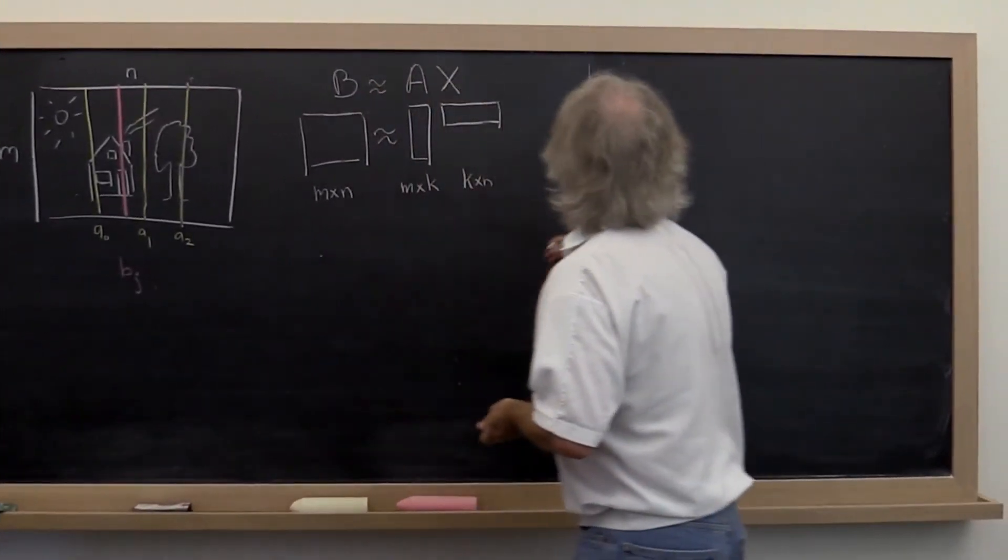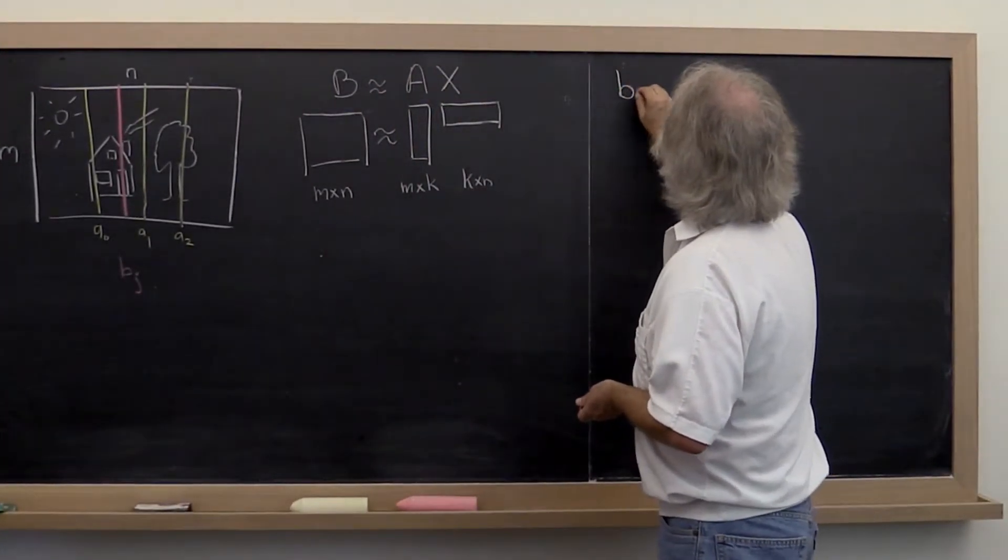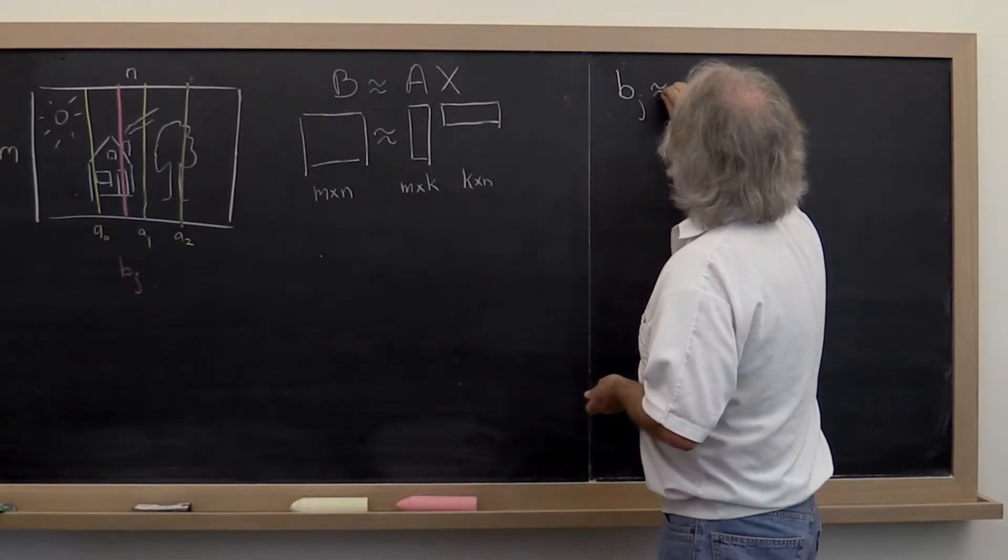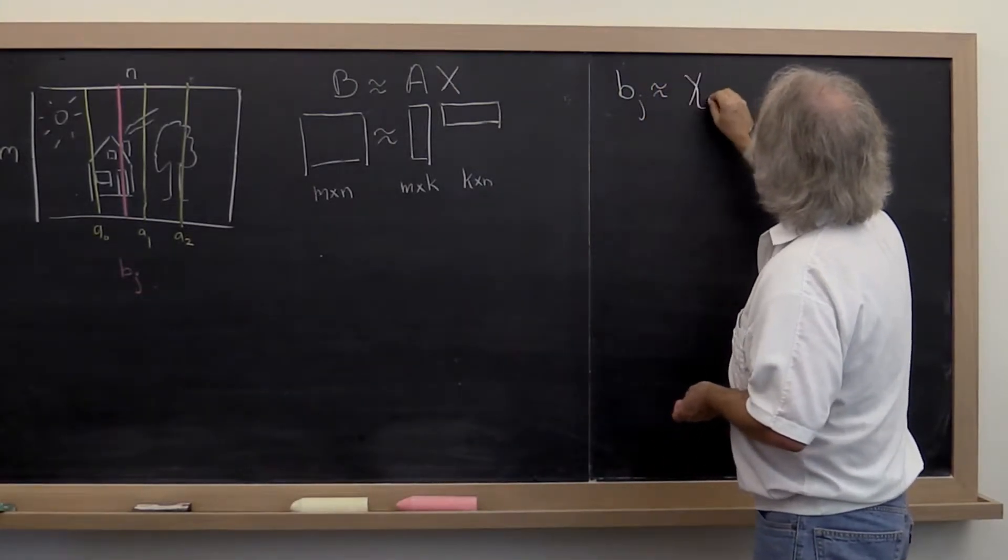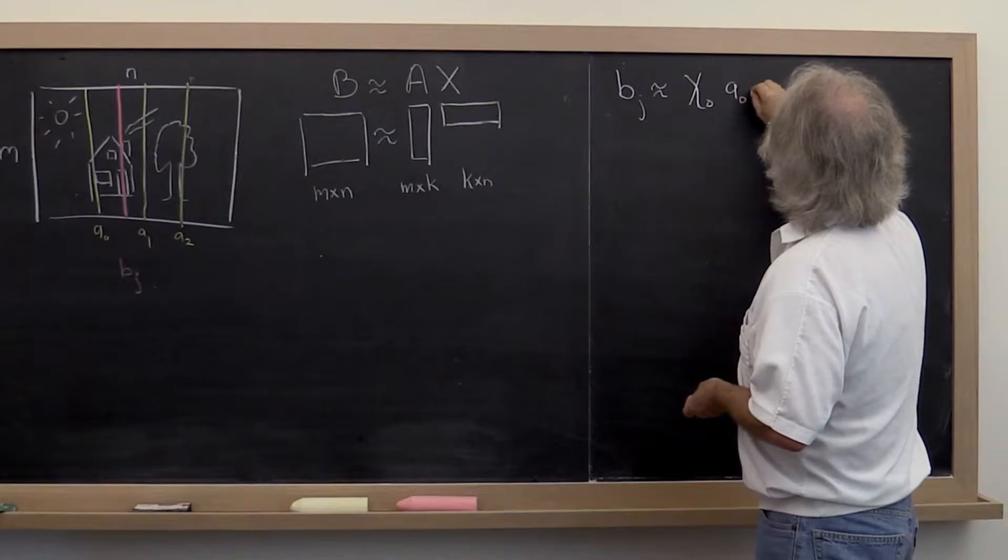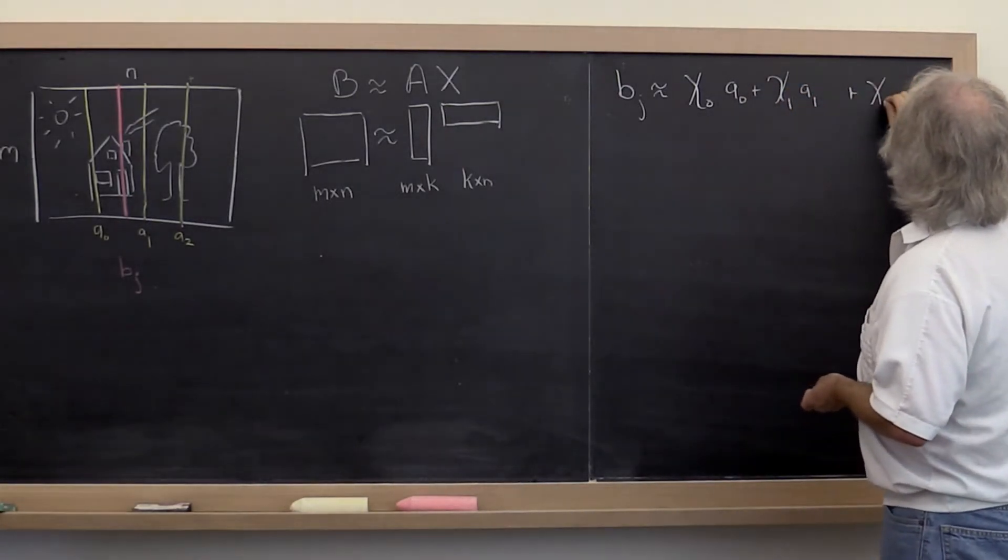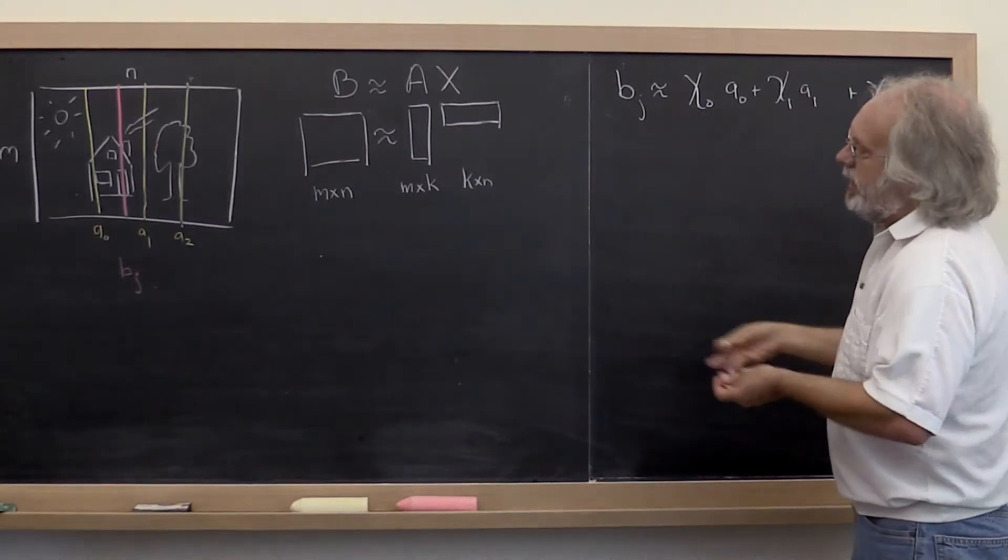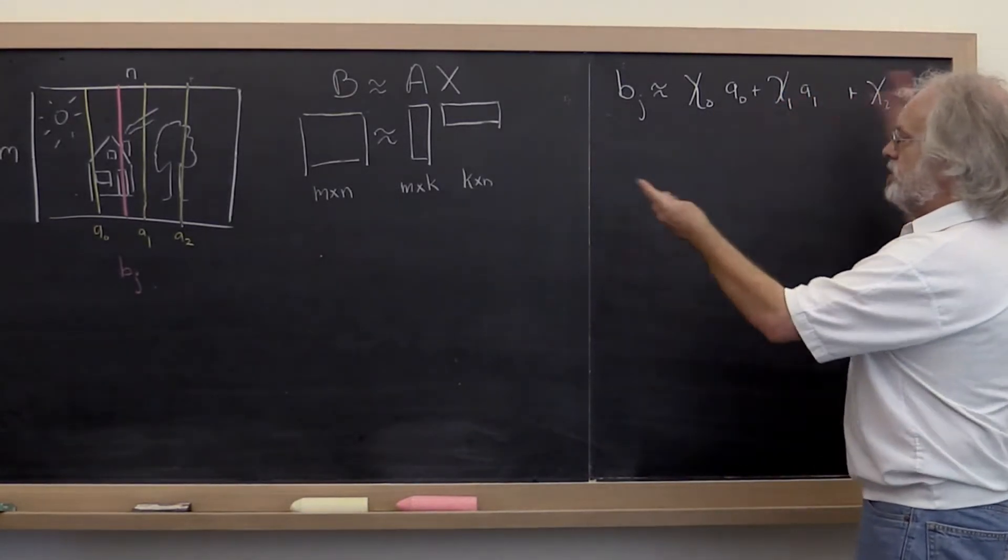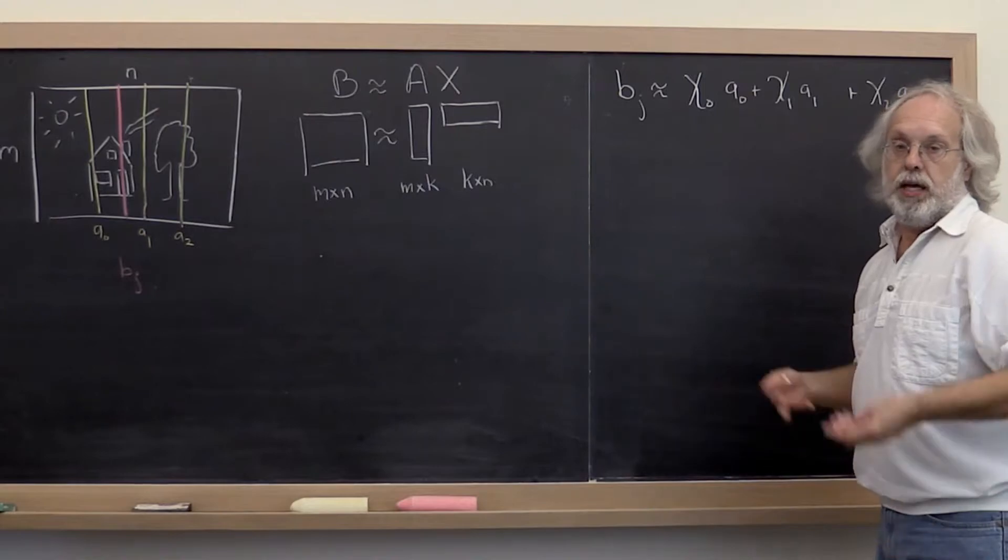What does that mean? We're saying that maybe Bj is approximately some constant chi0 times A0 plus chi1 times A1 plus chi2 times A2 for the case where we pick three columns. Obviously this generalizes to picking k columns.